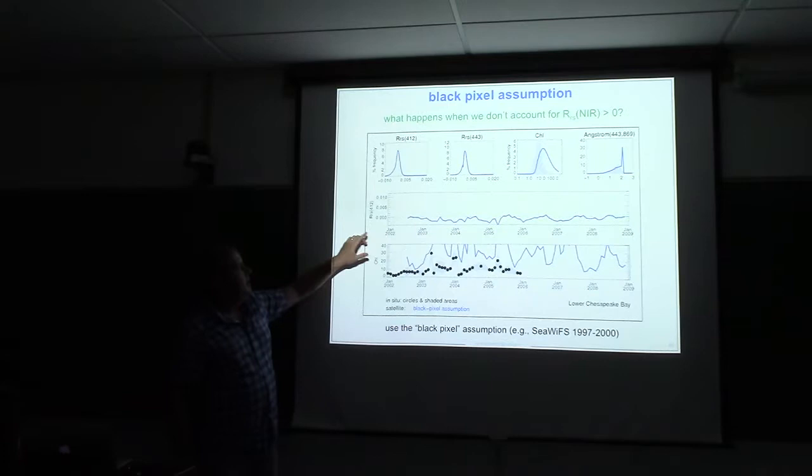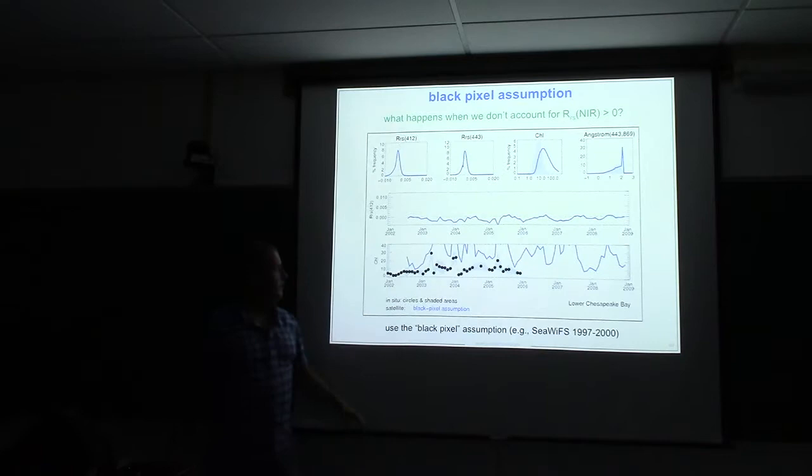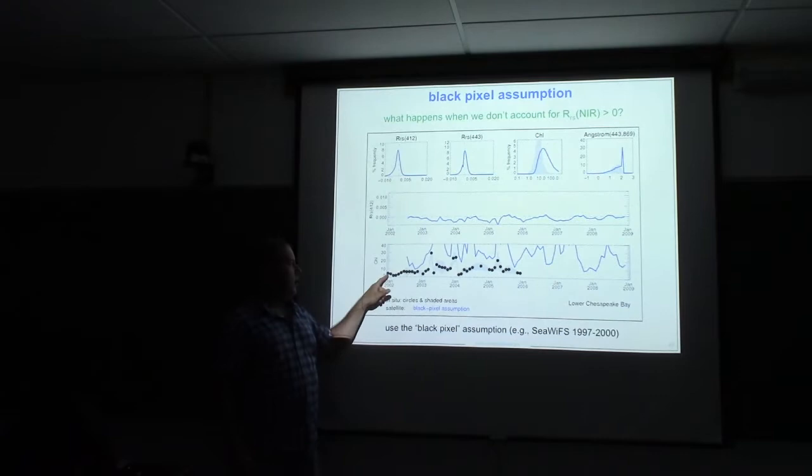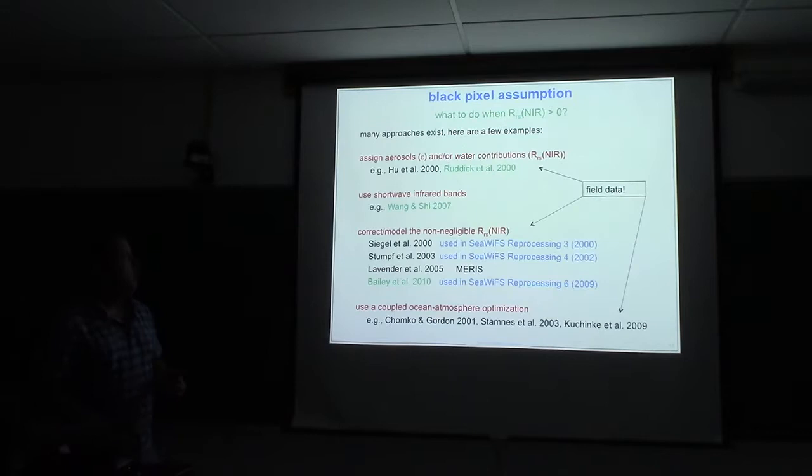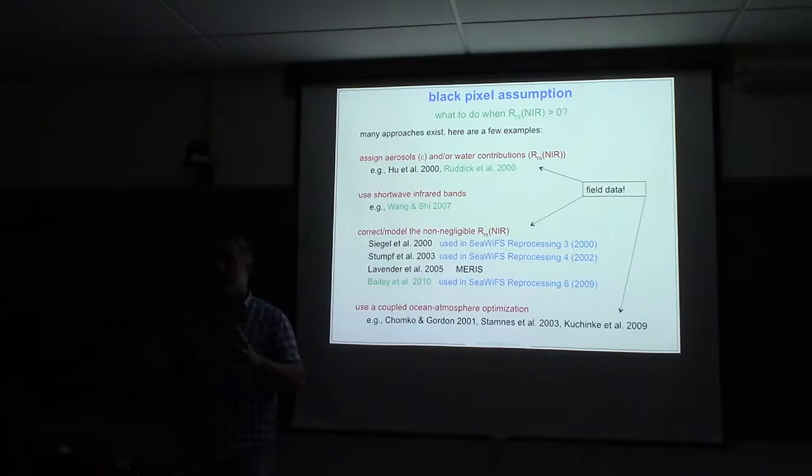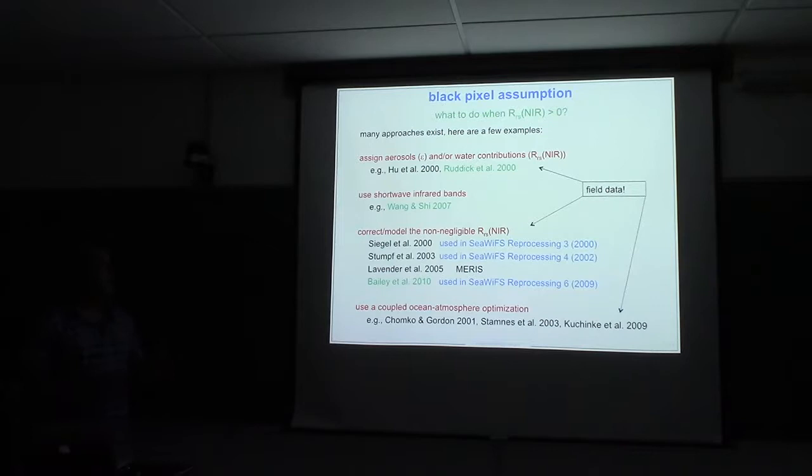And even if you accept that, the chlorophyll ends up being elevated relative to truth. So the gray background here is all the field data that was available. Let's say, for example, you just accepted these bands were bad and used other bands. Your retrievals are still going to not look very good. This is a time series of that. So this is remote sensor reflectance of 412. You'll see it's almost always negative. And then chlorophyll, just to show you again, compared to truth, which are the black dots, much higher than it ought to be. So, yes, we do this in every pixel, but this assumption isn't great.